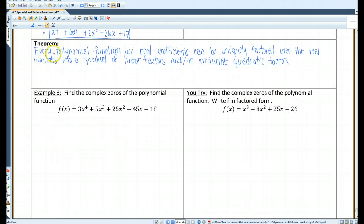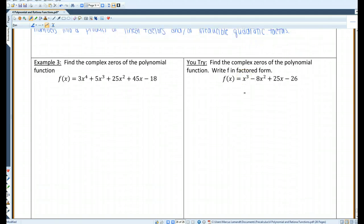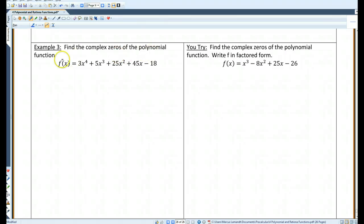Every polynomial function with real coefficients can be uniquely factored over the real numbers into a product of linear factors and/or irreducible quadratic factors. Let's do an example. Find the complex zeros of the polynomial function.